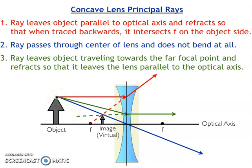Principal ray number two in blue is exactly the same as it was for the convex lens. It is simply a ray that passes through the center of our lens and does not bend at all. That is again an approximation, but one that works well as long as our lens is not too thick.